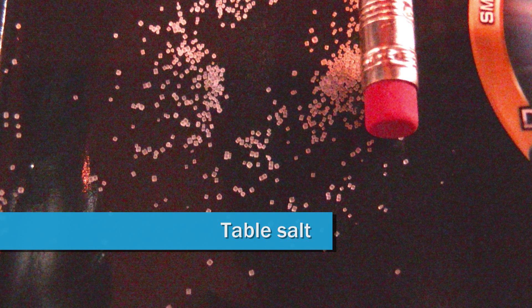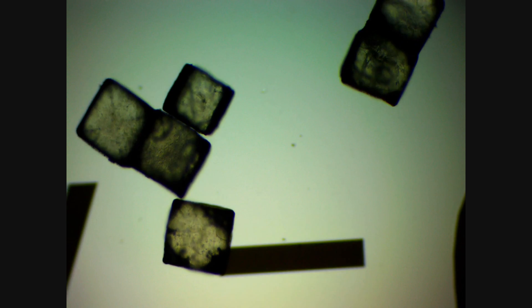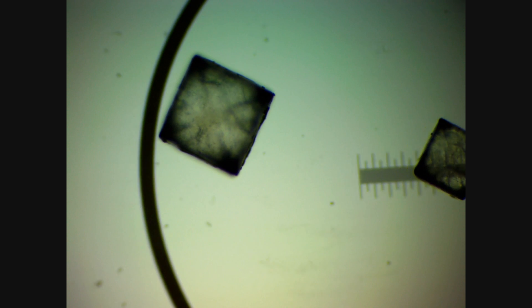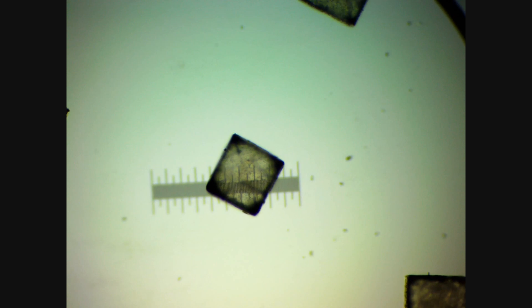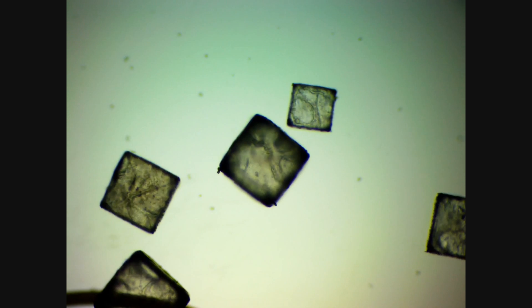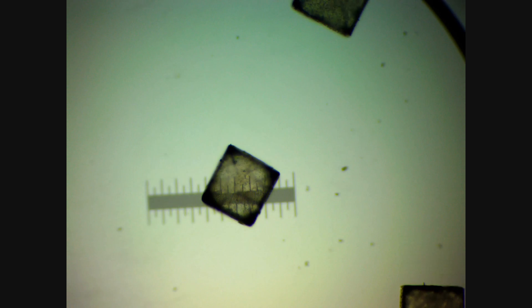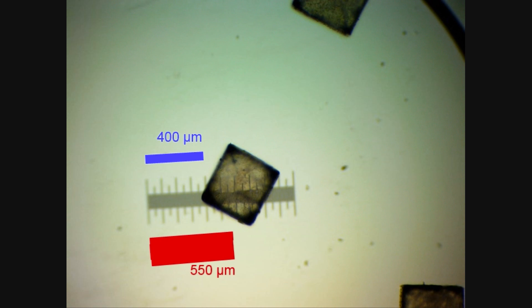Next up is table salt. These table salt crystals are much more uniform. They're nice and square. They don't have as much variance as the sugar crystals did. They're almost all around the same size, with a few exceptions. These crystals tend to range from about 400 to 550 micrometers.